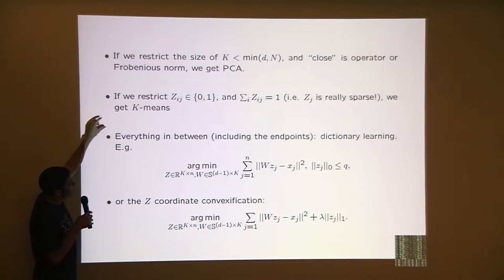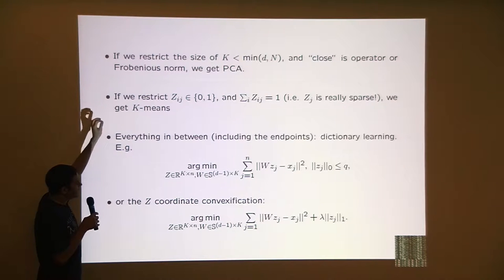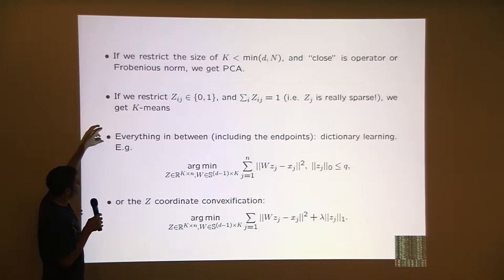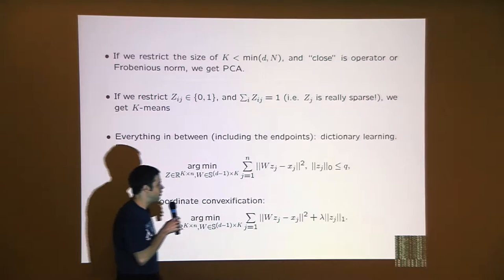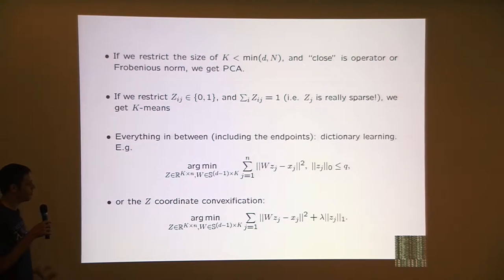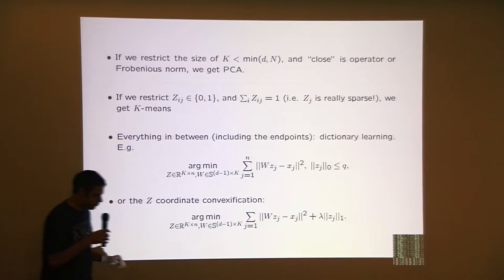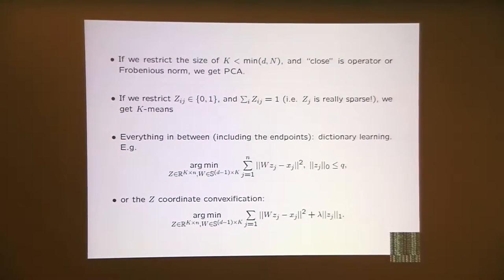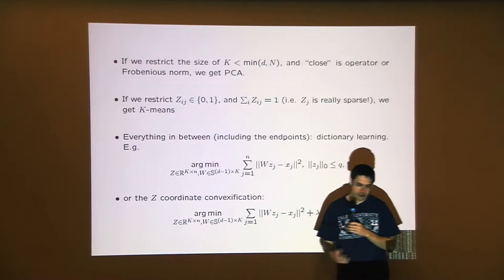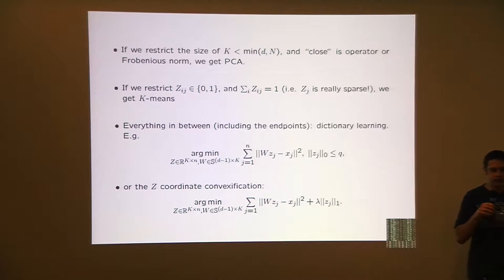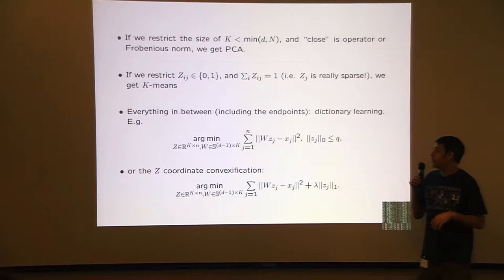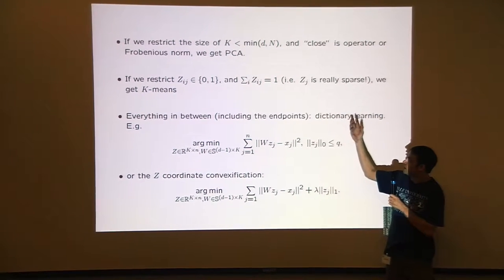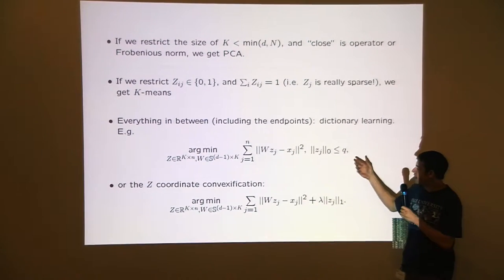Everything in between: this k-means case is the sparsest possible representation — for each column of Z, there's only one non-zero entry. If you go somewhere in the middle and say we want perhaps only q non-zeros per column of Z (not just one, where q is bigger than one), you get what's called sparse modeling or sparse coding proper. The important thing is you're training both W and Z together. In PCA, a solution to W gives in closed form a solution to Z. A clustering tells you the mean for each cluster. In sparse coding, training one and the other together is a big deal.